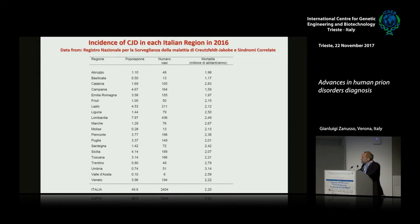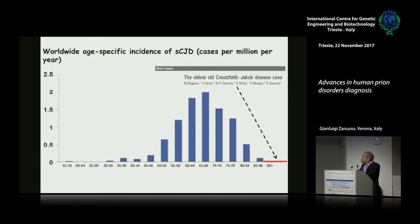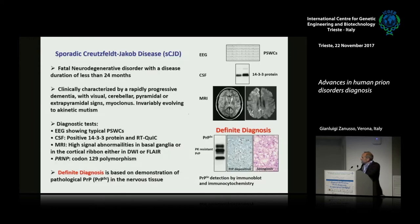Creutzfeldt-Jakob disease is the most common form. The incidence in Italy is 2.2 per million of people. The peak distribution is between 65 and 70 years of age. The characteristic of this disorder is a rapidly progressive disease — 24 months is usually the longest duration. It is clinically characterized by different clinical onsets: dementia, visual disturbance, cerebellum. It might be variable in terms of clinical onset. There are diagnostic tests which might help in the diagnosis.